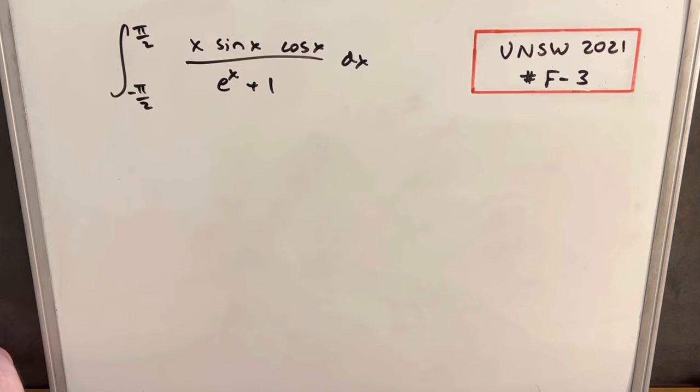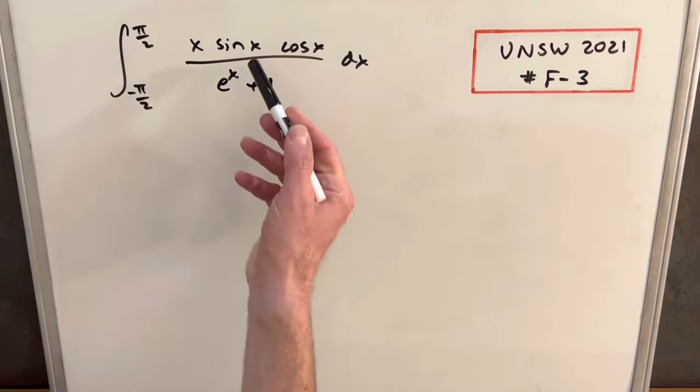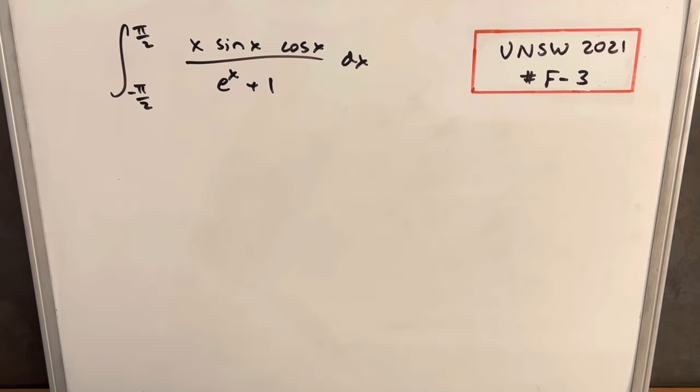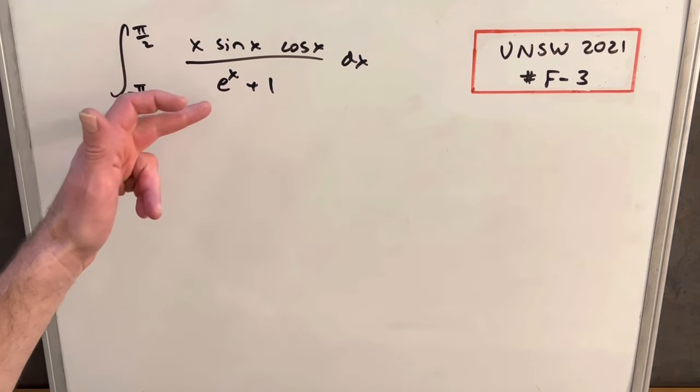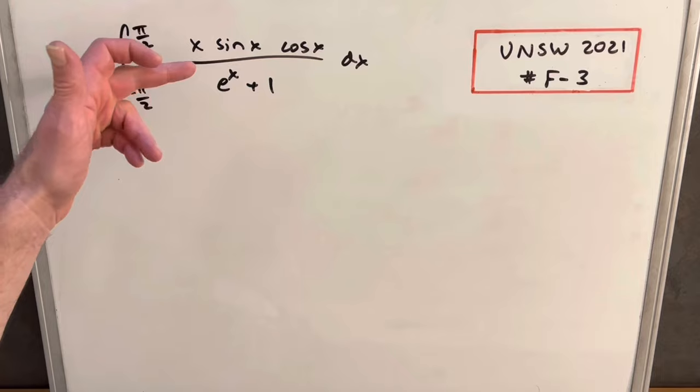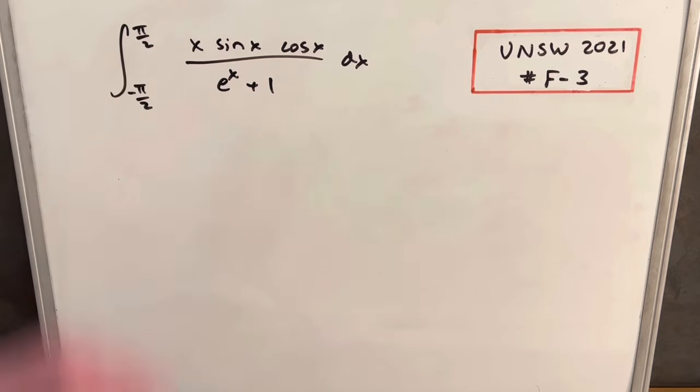I was staring at this one for a while because I wasn't sure what to do. The problem is sine and cosine work fine together, but then we have an x making it more complicated. And then e to the x, we really have a hard time. Any kind of u substitution seems like it's going nowhere. Might be able to try integration by parts, but it looks like it would be kind of messy.